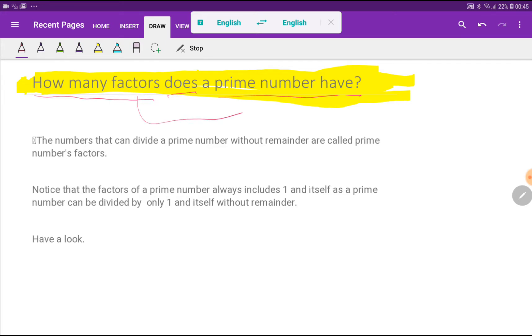The numbers that can divide a prime number without remainder are called prime number's factors. Notice that the factors of a prime number always include 1 and itself.